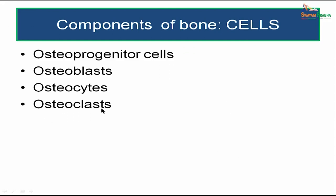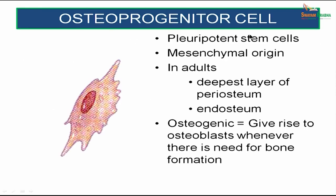There are four types of cells: osteoprogenitor, osteoblasts, osteocytes, and osteoclasts. Osteoprogenitor cells are pluripotent stem cells, mesenchymal in origin. In adults, they are found in the deepest layer of the periosteum and also in the endosteum. Their function is osteogenic — they give rise to osteoblasts whenever there is a need for bone formation.